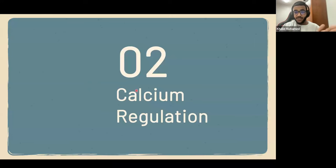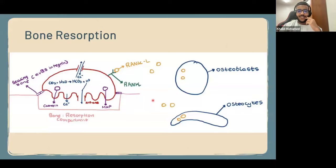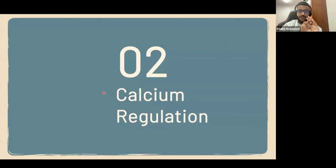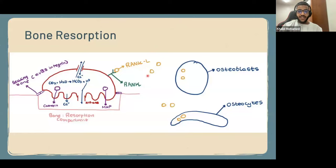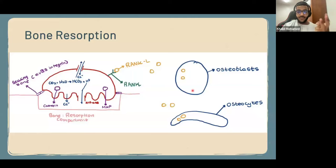Now let's talk about calcium regulation — the most important part of the lecture. The three main organs for calcium regulation are the parathyroid gland, the kidney, and the bone. Bones are constantly in a remodeling state — broken down and reformed continuously. There are three main cell types in bone: osteoblasts, which are the stem cells of bone cells; osteocytes, which are just bone cells; and osteoclasts, which act as the macrophages of the bone and are responsible for bone resorption.